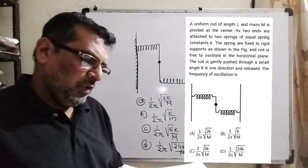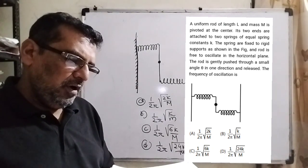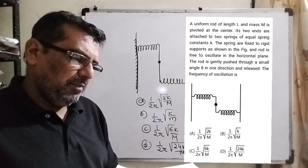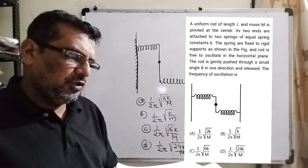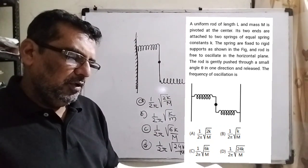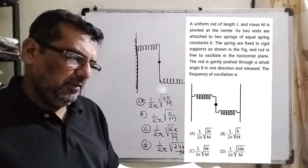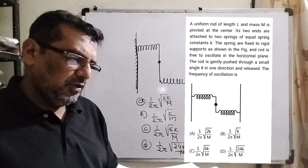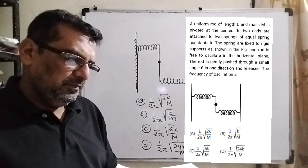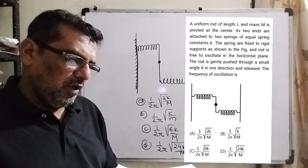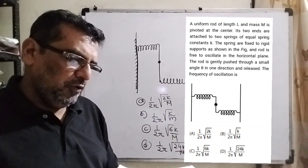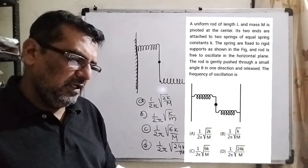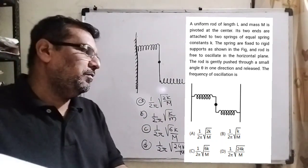Let's see what the question says. A uniform rod of length L and mass M is pivoted at the center. Its two ends are attached to two springs of equal spring constant K. The springs are fixed to rigid supports and the rod is free to oscillate in the horizontal plane. The rod is gently pushed through a small angle theta in one direction and released.